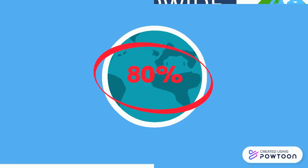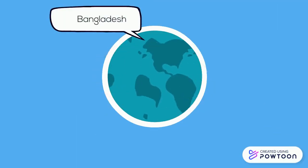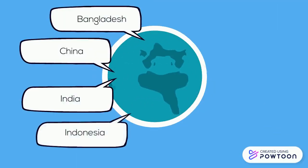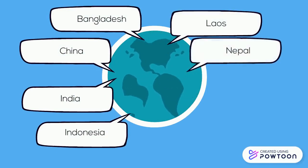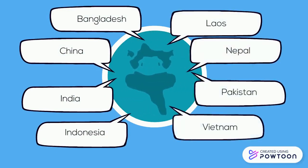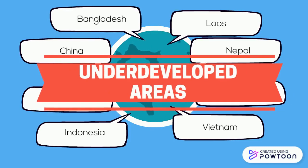80% of cases come from Bangladesh, China, India, Indonesia, Laos, Nepal, Pakistan, or Vietnam. Within those countries, typhoid fever is most common in underdeveloped areas.